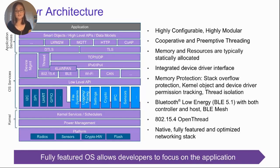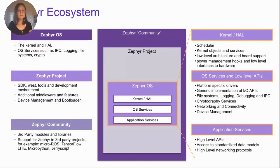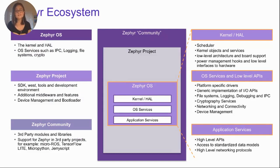Memory resources are statically allocated, so you can get a good idea upfront of the upper bound of your OS memory consumption and plan for it. Zephyr has a rich networking stack and a Bluetooth stack. At the core of the ecosystem, you have the OS itself with three layers: the kernel hardware abstraction layer with the smallest footprint, kernel objects, services, and low-level architecture; above that, OS services including networking stack, IP stack, Bluetooth stack, and crypto libraries; and at the highest layer, application services with high-level networking protocols and higher-level objects you can take advantage of.